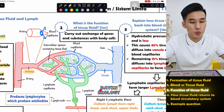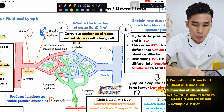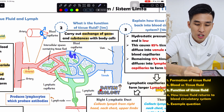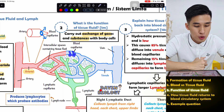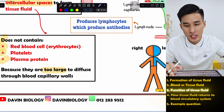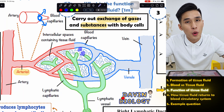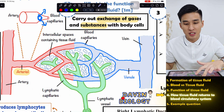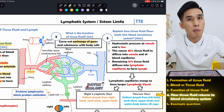What does the tissue fluid do? They carry out exchange of gases and substances with the body cells. The nutrients — oxygen, glucose, amino acids — all come out and exchange with the body cells. Once they are done, they have to go back to the blood. That is the main purpose of your lymphatic system: to help return this excess tissue fluid.